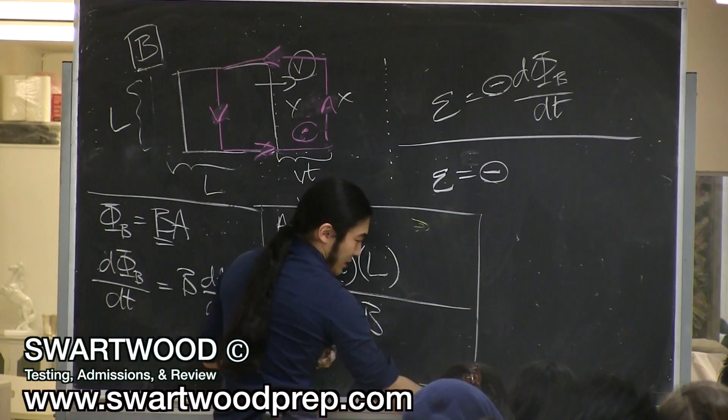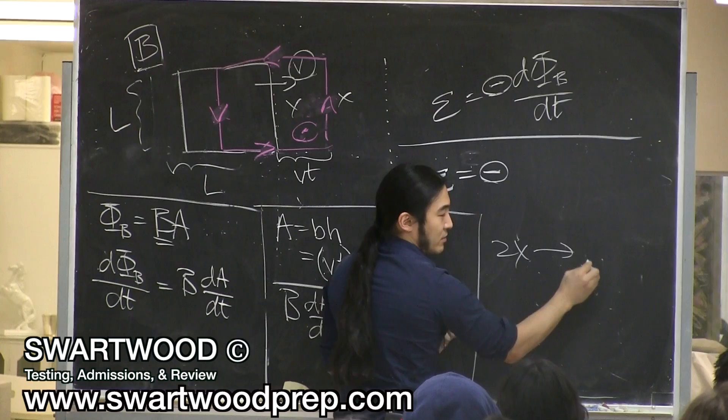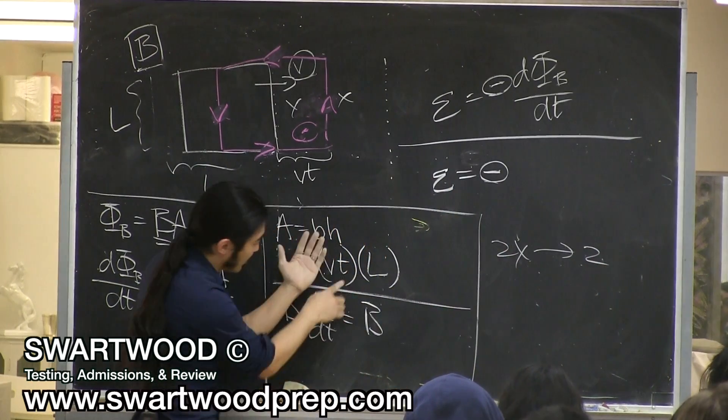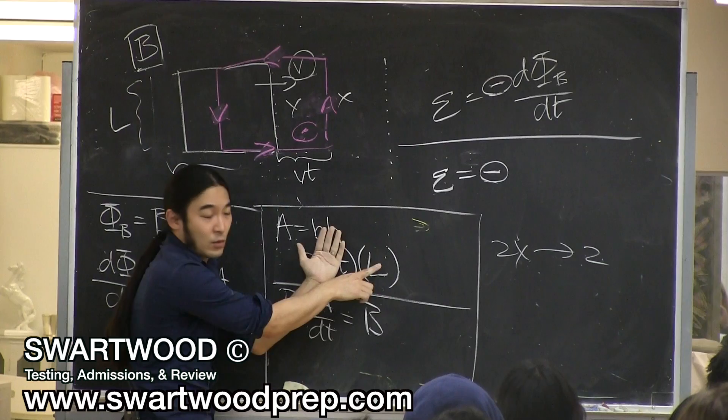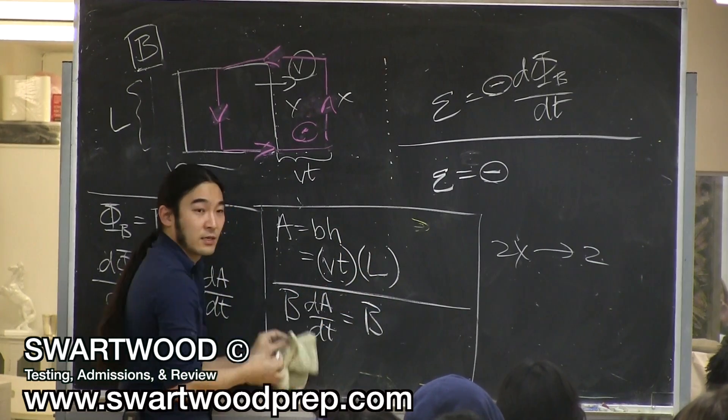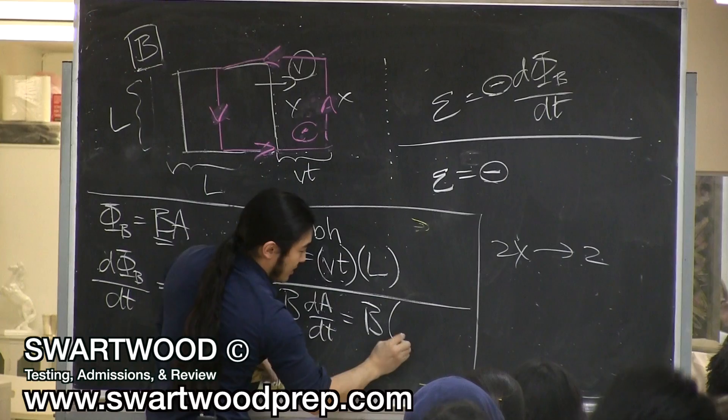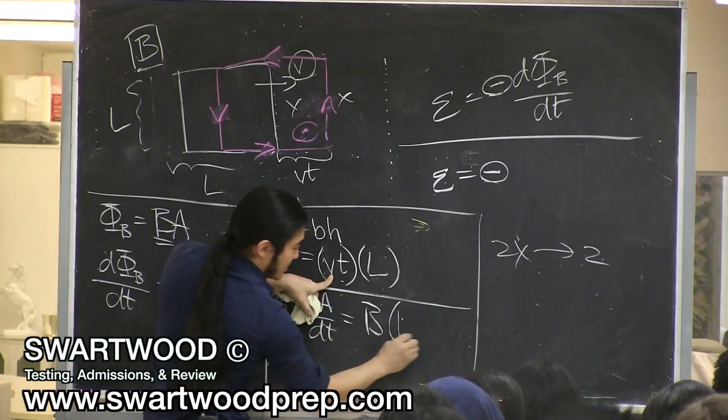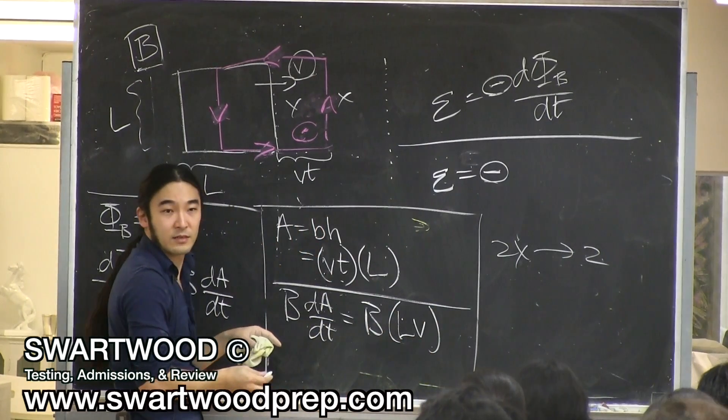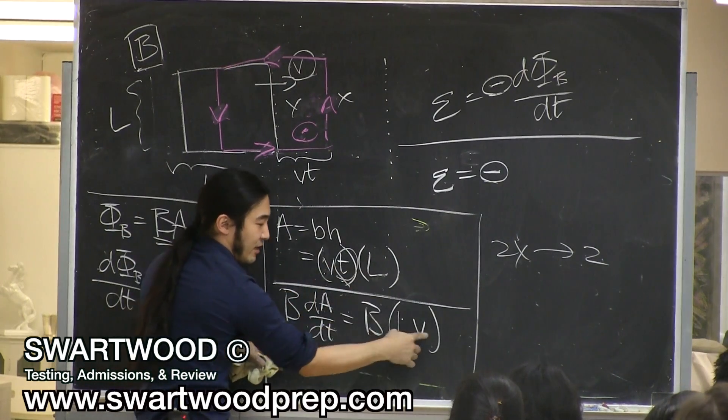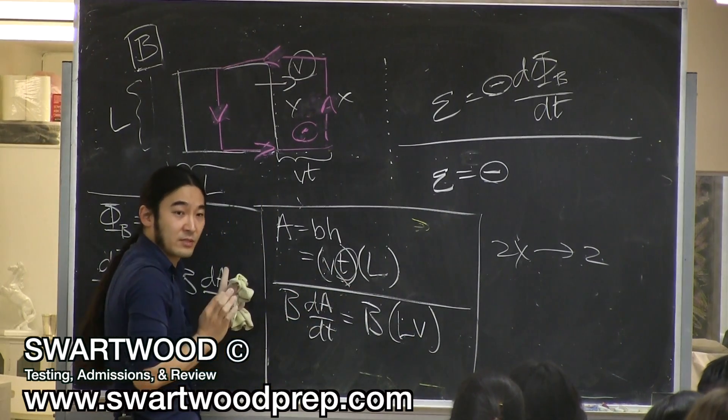The derivative of 2x is just what? 2. So the constant comes out. The derivative of x is 1. What's the derivative of t? 1. So you tell me, the derivative of this guy is? L, V. Just like you said. The derivative of t, that's the variable, is just 1. These constants are just along for the ride. L, V.